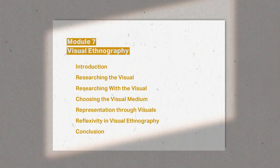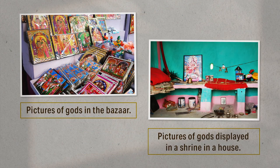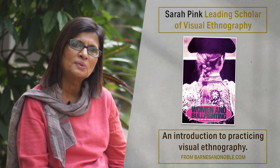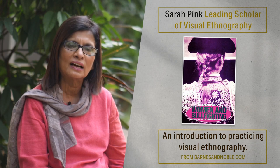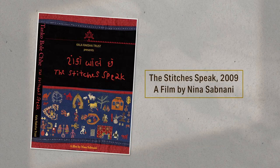And then we come to module seven, where we learn about visual ethnography. We learn to read images and visuals in the context that we are studying. Through this, we try to understand the meanings that people associate with these images. And we learn to make images as a way of engaging and learning. We show and discuss several examples of how film, photography, drawing and animation may be used as a way of doing ethnography.